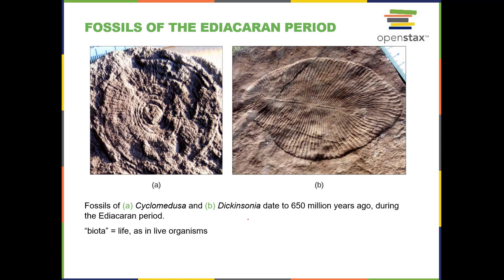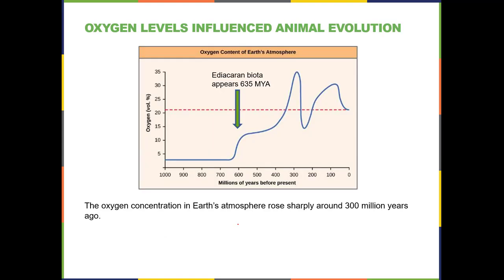We do find fossils in the Ediacaran rocks. Cyclomedusa and Dickinsonia are examples of fossils found from that period, though you don't need to memorize these. They tend to find the same kinds of fossils over and over again.